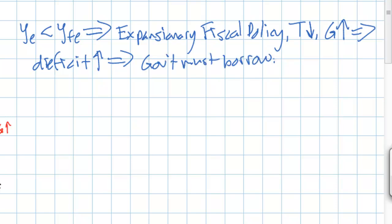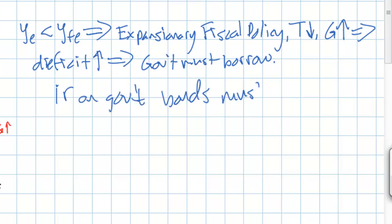How does a government attract lenders in order to finance this increased budget deficit? The way it does this is by offering higher interest rates on government bonds. We've seen this recently in Europe, as the Italian government, which is running a persistent budget deficit, has had to raise the interest rate that it offers on its government bonds above 7%. This is evidence that when a government runs a large budget deficit, the interest rate on government bonds must increase.